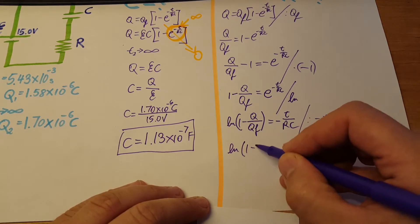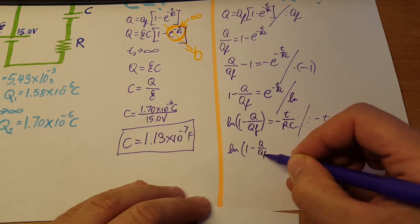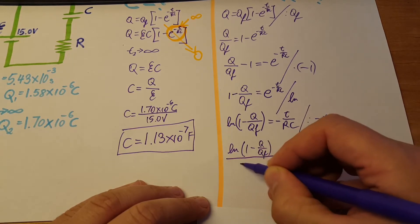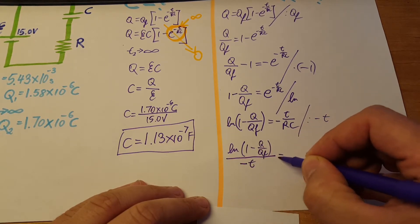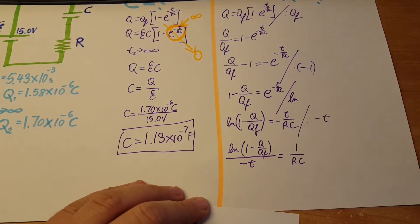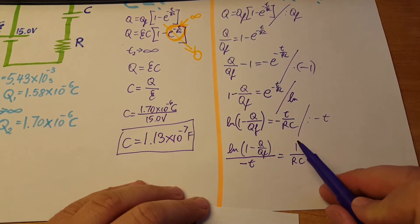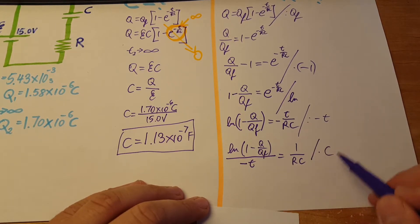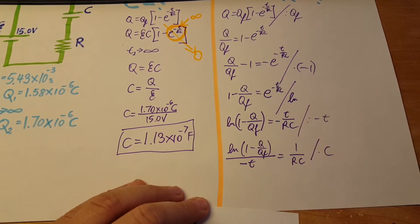LN of one minus Q over Q final, the whole thing divided by negative t, equals one over RC. Now we can get rid of the C by multiplying - it's gonna move up here.